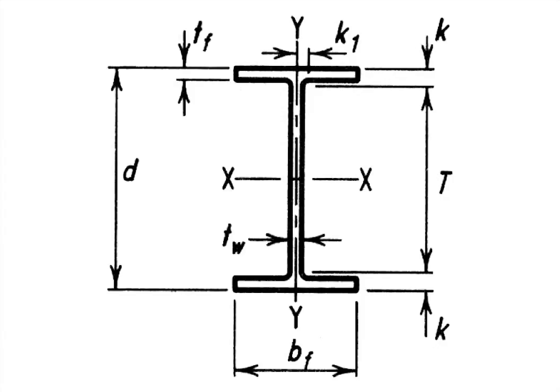Structural shapes such as these have two major surfaces. One is called the flange, shown as B sub F and T sub F dimension, and the other is called the web, shown as the T sub W dimension.